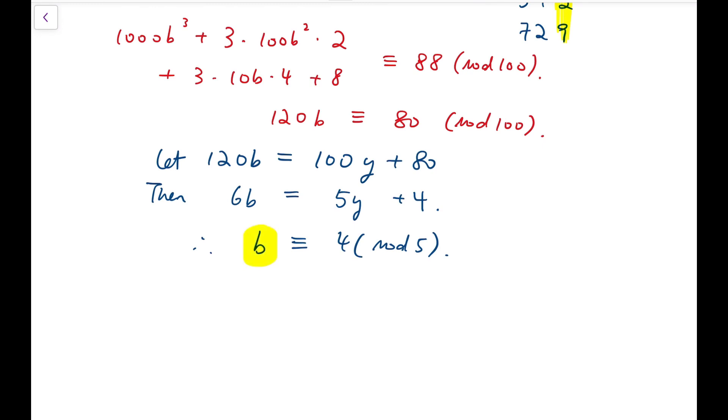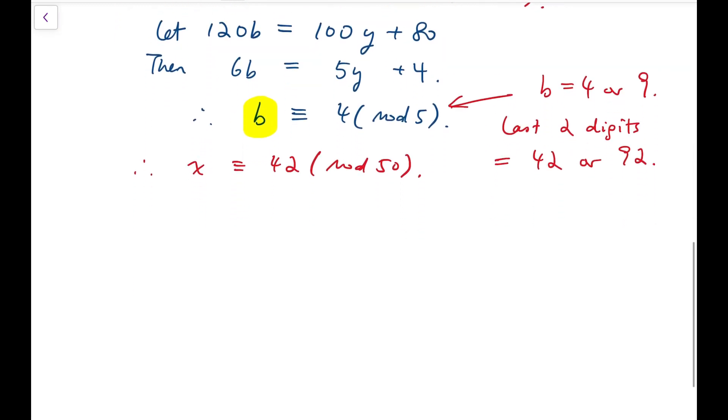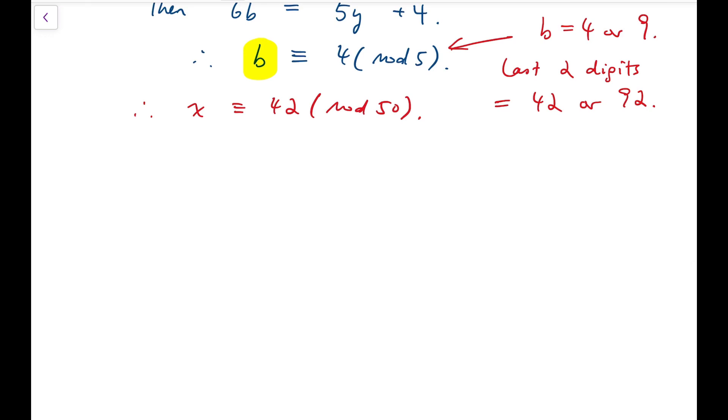Now, knowing that b is again a digit, so b can only be 4 or 9. Now, that means our last two digits of our answer x is either 42 or 92. But, for both cases, I can say that our answer x is congruent to 42 mod 50. We don't actually need to consider x mod 100 because mod 50 would be sufficient. The following steps are going to explain why this is the case.